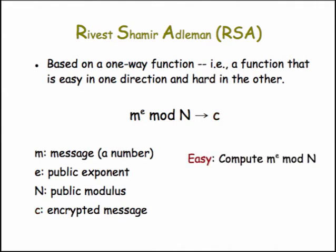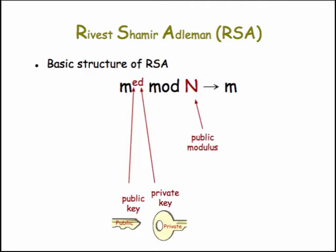It's easy to compute M to the E mod N knowing M, E, and N, but it's very difficult — it's intractable — to find M given the encrypted message plus the public key E and N. The idea for the public and private key is that they are two halves of this exponent used in the expression M raised to an exponent mod N. The trick, mathematically, is to construct this exponent in such a way that it's very hard to split it in half if you don't know some secrets.